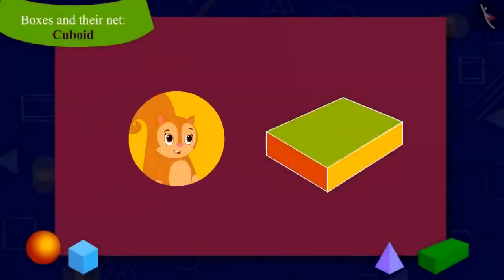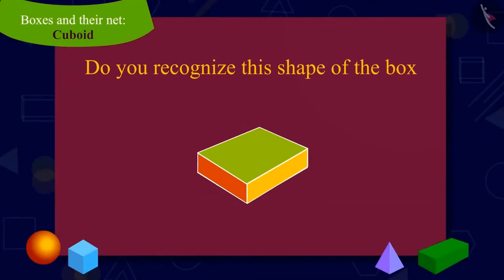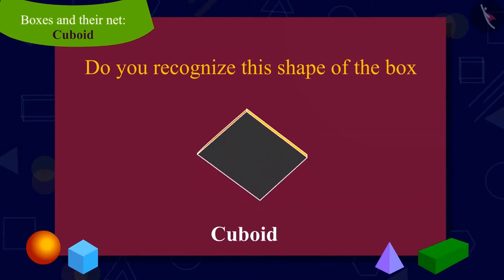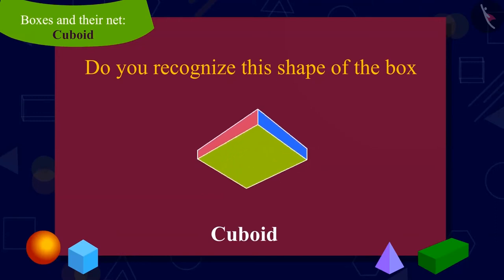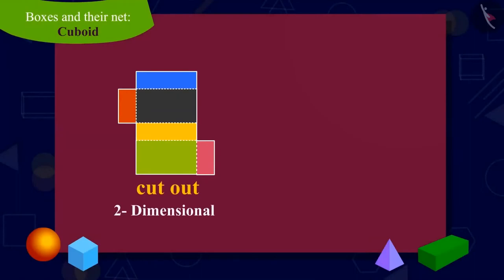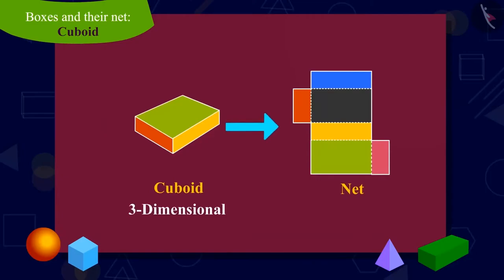Children, were you also shocked like Chanda? Do you recognize this shape of the box? It is a cuboid. Every face of a cuboid is rectangular. Do you know that two-dimensional shapes, like the cutouts of this cardboard, which when folded, make three-dimensional shapes like the cuboid? This is called the net of the shape.